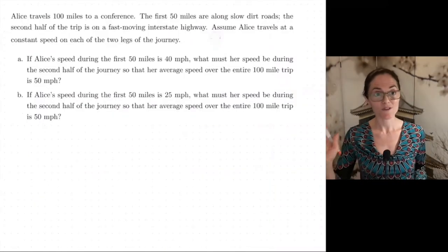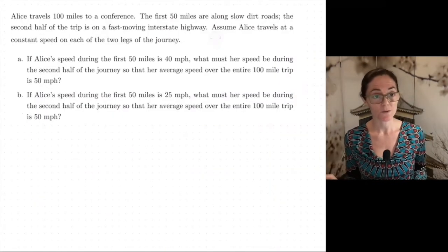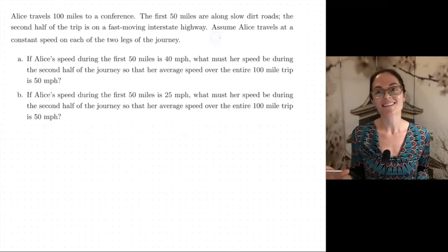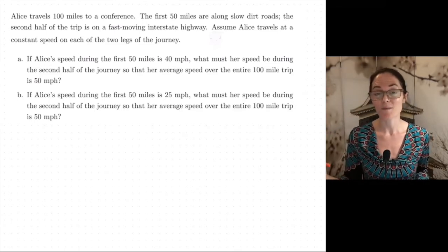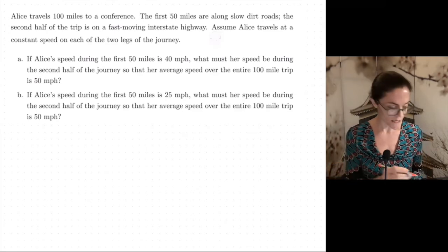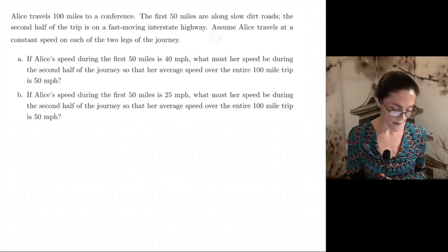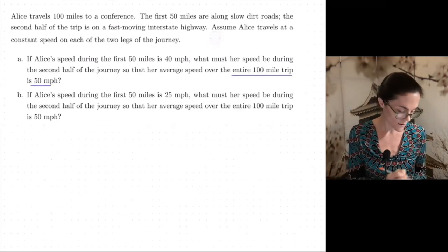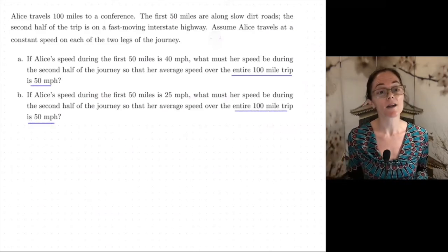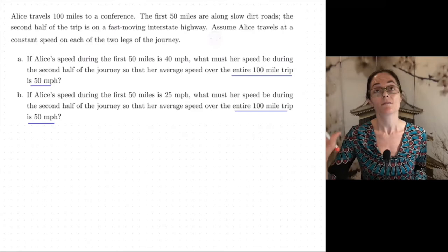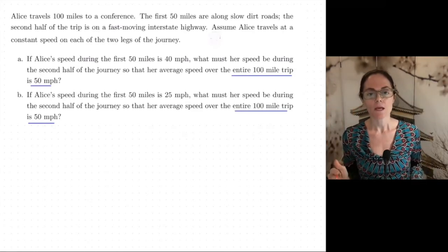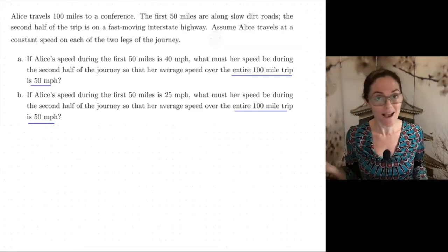Alice is traveling 100 miles to a conference. And the first 50 miles, she travels at a constant rate. And the second 50 miles, she travels at a constant rate. And then we're asked some questions. But what we see immediately in both of these, for both A and B, the entire 100 mile trip, she wants to average 50 miles per hour.